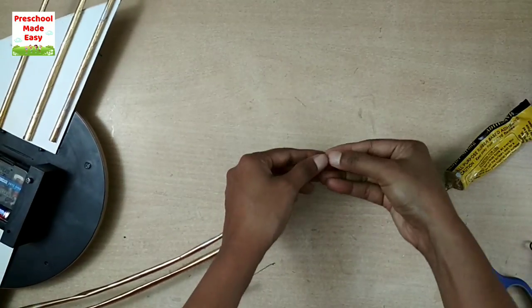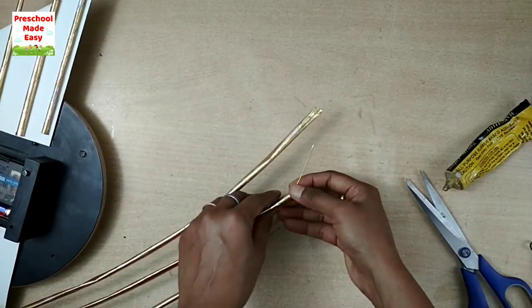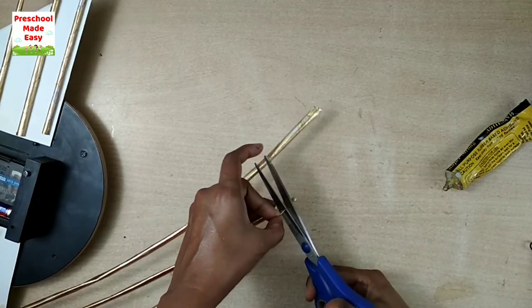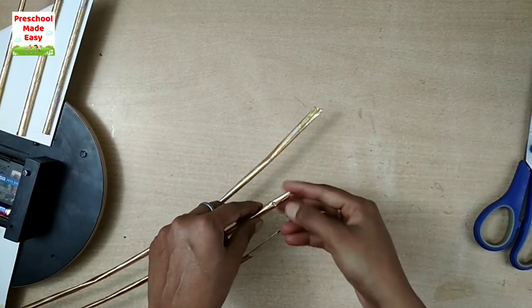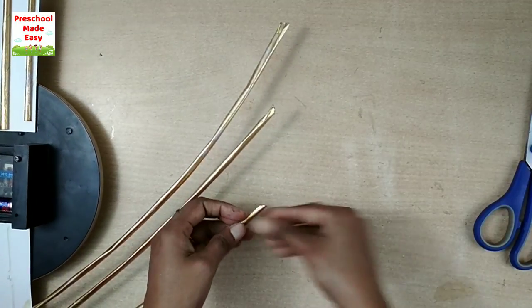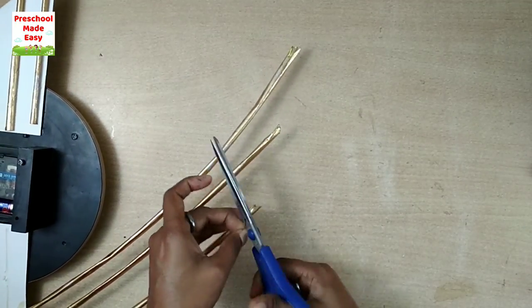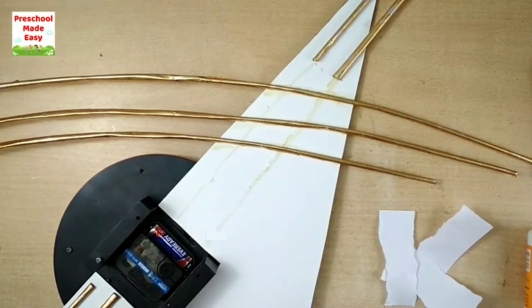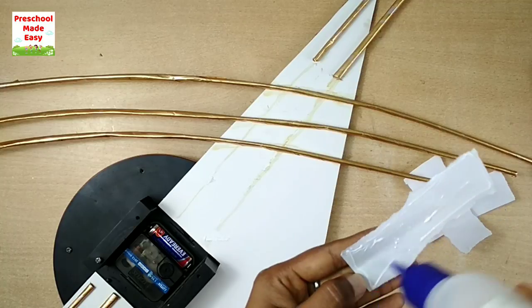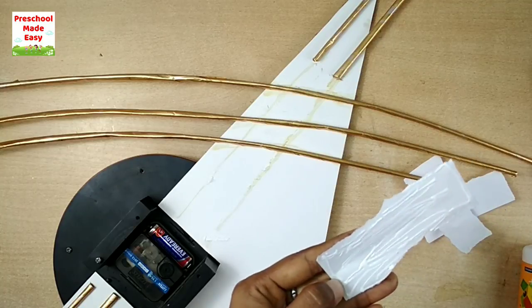I'm turning this wire ends backwards and cutting the rest. To make this strong, I'm sticking small paper on these rolls.